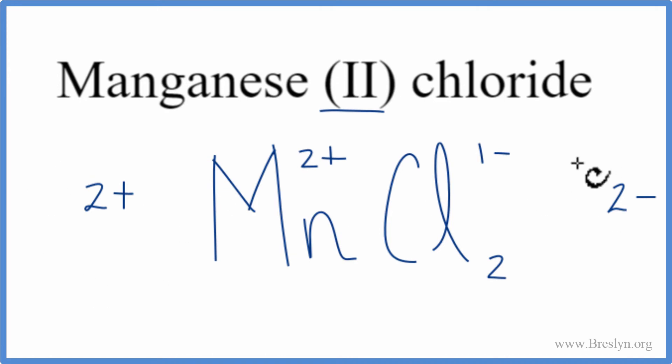So 2+ and 2-, they cancel out, give us a net charge of zero. So this is the correct formula for manganese (II) chloride.